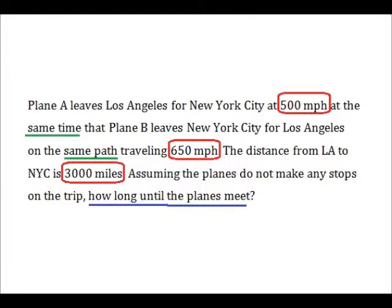Here, I have boxed and underlined information to help me understand this problem. We know that plane A has a rate of 500 miles per hour and plane B has a rate of 650 miles per hour. And we know the distance between the two cities is 3,000 miles. We also know that the planes left their respective cities at the same time, are traveling on the same path, and will not make any stops on their journeys.